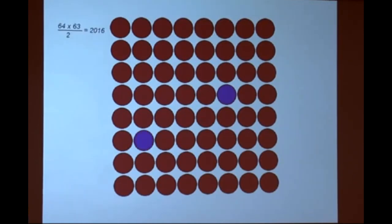64 configurations with one flipped coin. How many with two flipped coins? Well, you can work it out. It's 64 times 63 over 2. And the answer is 2,016. The numbers are going up fast. Rather fast.